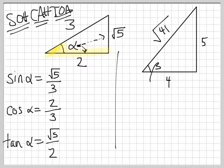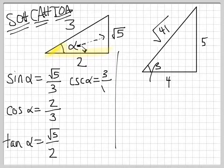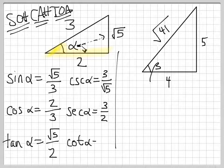And likewise, we can do cosecant. Cosecant is 1 over sine, and so we just flip the fraction and we get 3 over radical 5. Secant is 1 over cosine, so we get 3 halves. And cotangent is 1 over tangent, and so we get 2 over radical 5. And so there are all of our values.